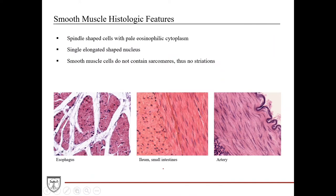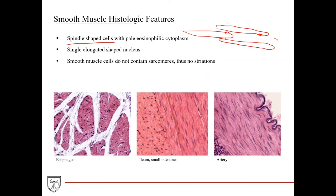Some histological features: smooth muscle cells are spindle-shaped and arranged in sheets. They have pale eosinophilic cytoplasm — although they lack sarcomeres, they still have a high concentration of proteins within their cytoplasm, contributing to that eosinophilic appearance. Importantly, the nucleus helps differentiate these cells, especially from cardiac and skeletal muscle. Smooth muscle has a single nucleus, whereas skeletal muscle has multiple nuclei. Cardiac muscle usually has one, sometimes two. The key distinction is that cardiac and skeletal muscle nuclei are round, while smooth muscle nuclei are elongated.